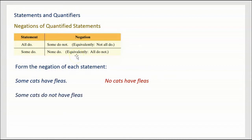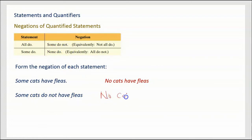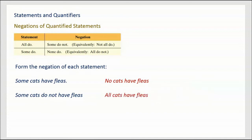Next: 'Some cats do not have fleas.' The negation of 'some do not' would be 'none do not,' which is the same as 'all do.' So the negation is 'all cats have fleas.' If no cats do not have fleas, that's exactly the same thing as all cats have fleas. If you have no cats that don't have fleas, does that not mean every single cat has a flea? Yes — that's the same thing as all cats have fleas.